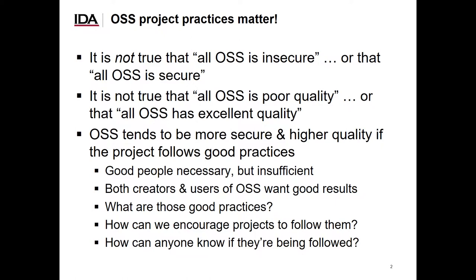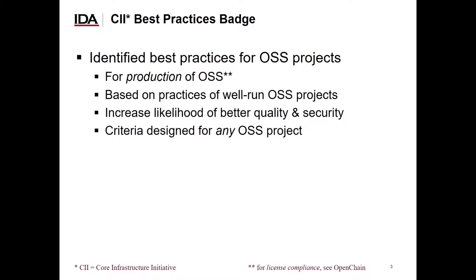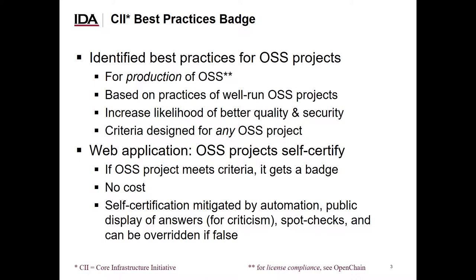But what are those good practices? How can we encourage projects to follow them? And how can anyone know if those good practices are being followed by some particular project? This leads us to the CII Best Practices Badge. We identified a set of best practices for producing open source software based on the practices of well-run open source software projects. Each practice increases the likelihood of producing better quality or security. We then turned those practices into a simple set of criteria that can be applied to any open source software project. We also developed a web application that allows open source software projects to self-certify that they meet the criteria. If a project meets the criteria, it gets a corresponding badge — at no cost.